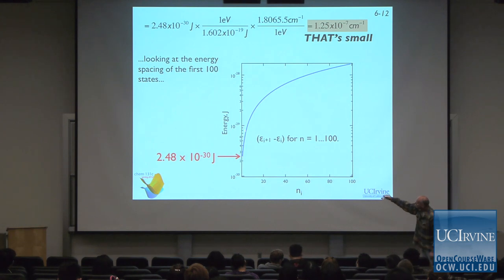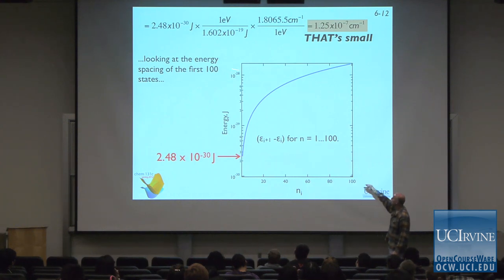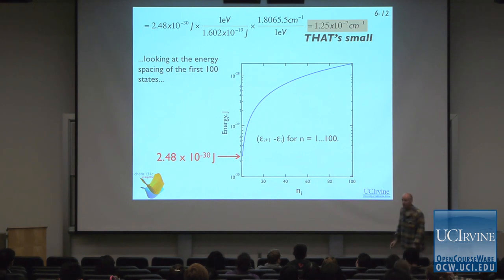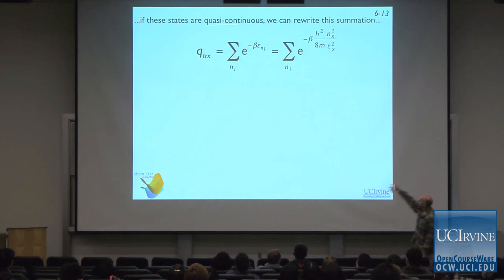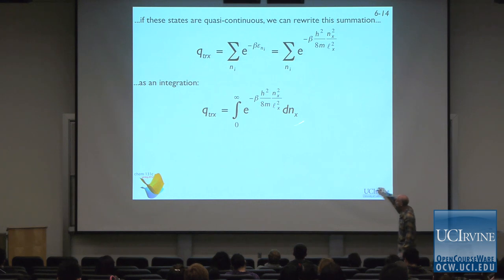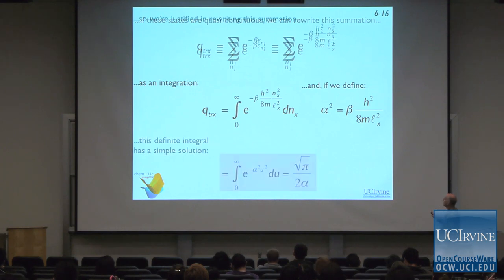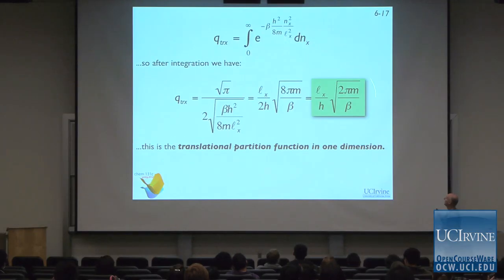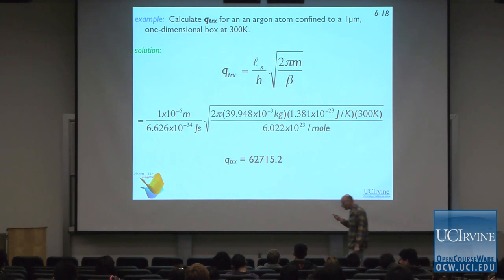You're never going to see a box as small as a micron in practice. The state spacing is on the order of 10^-28 even between states N=100 and N=101 — a really tiny number. Since these states are quasi-continuous, we don't want to evaluate the summation explicitly with millions of terms. Instead, we treat it as an integration. That's the trick from Wednesday, and evaluating that integral gives us the one-dimensional translational partition function.